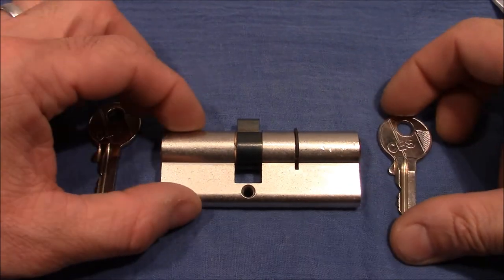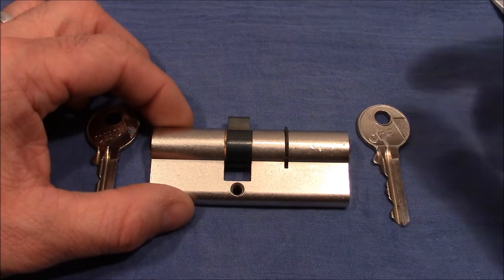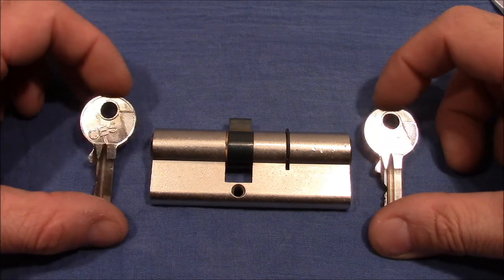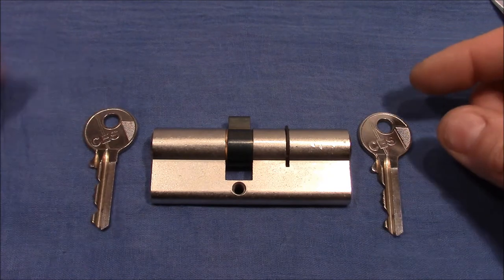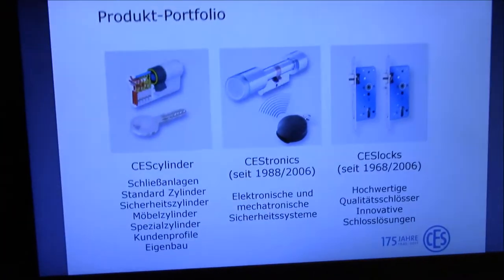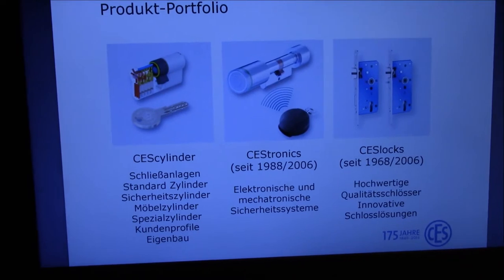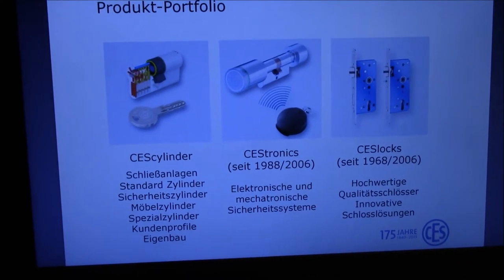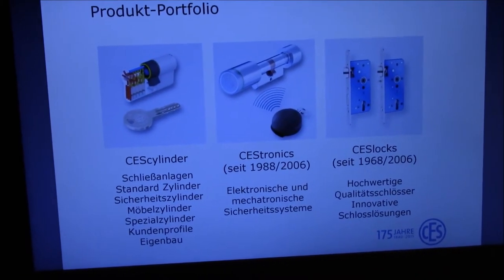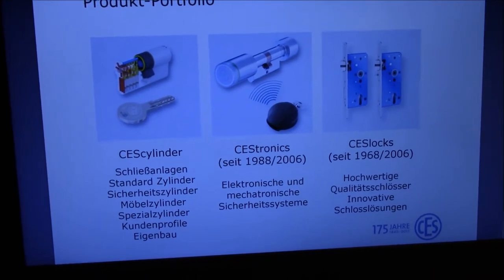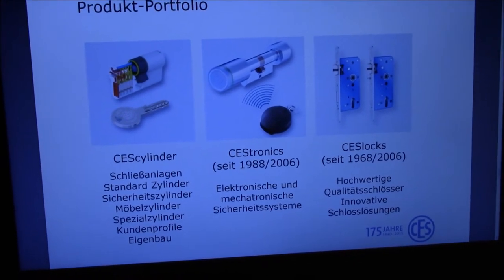CES is still a private company, it does not belong to Assa Abloy or any other big group but itself operates worldwide and consists of three parts. From the website you can read that the CES group consists of Cylinder, Tronics, and Locks. Cylinder is what we know from the locks we pick and they also make master key systems, for example the master key system for the German parliament in Berlin or for the Microsoft headquarter in Munich.